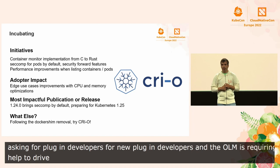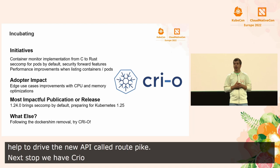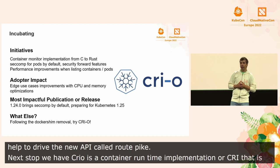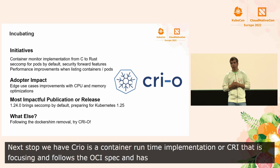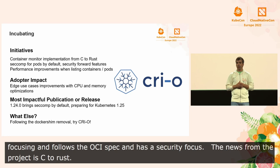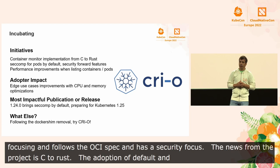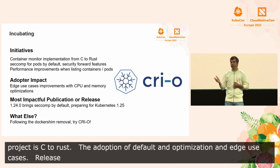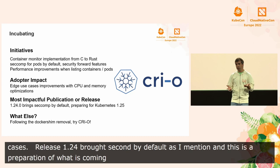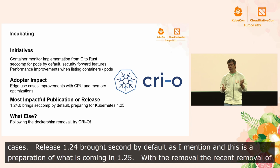Next we have CRI-O — a container runtime implementation, or CRI, that focuses just on Kubernetes, follows the OCI spec, and has a very strong security focus. News from the project includes a move from C to Rust in the monitoring components, the adoption of SecComp by default, and performance optimizations that open up the usage of the project in edge use cases. Release 1.24 brought SecComp by default, which is a preparation for what's upcoming in Kubernetes 1.25. With the recent removal of the docker shim in Kubernetes, the project is reaching out to people to try CRI-O for their CRI implementation.